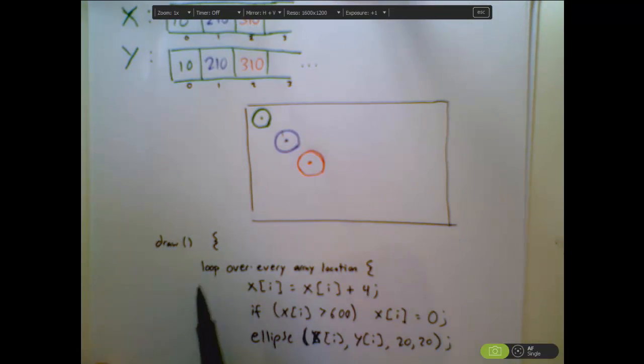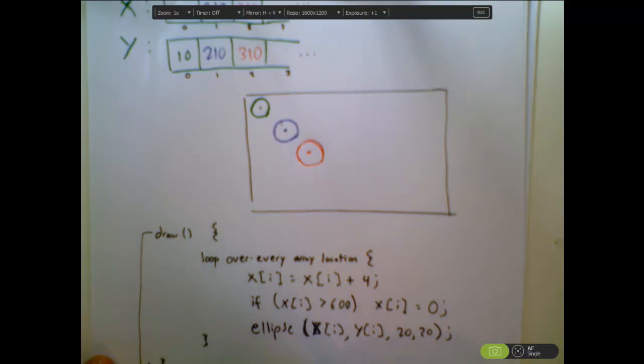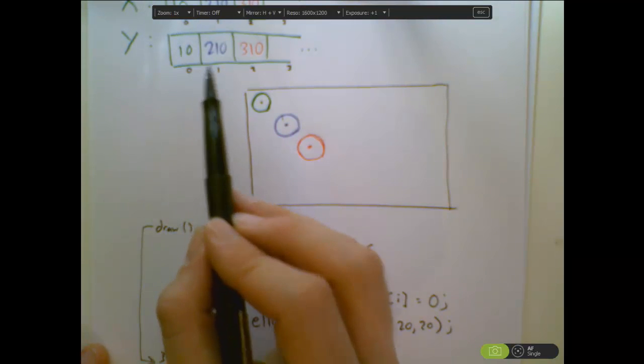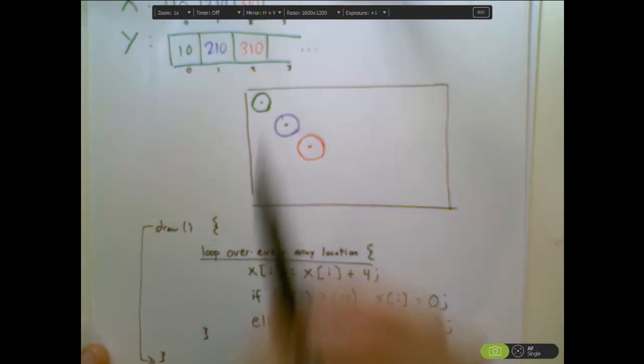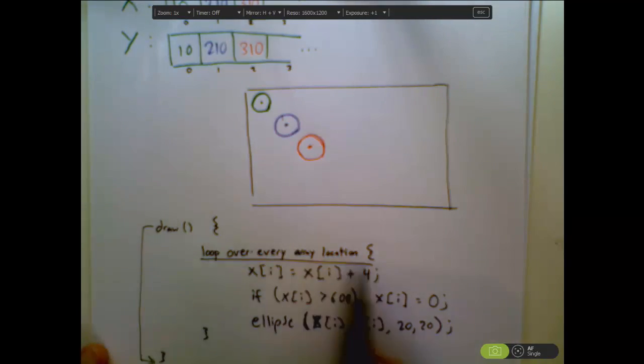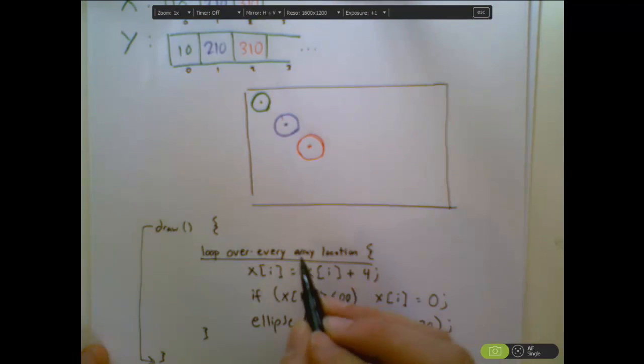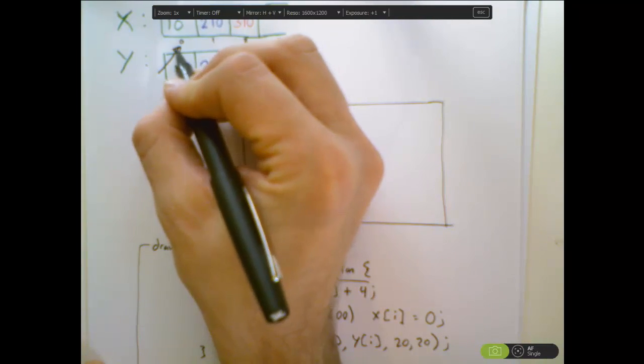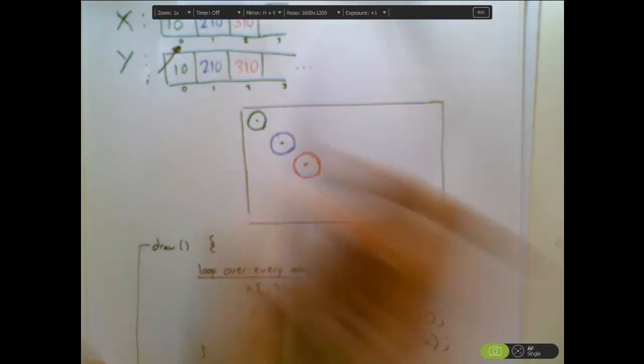Alright, so inside the draw loop, it's going to have the exact same steps, only I'm going to need to have a loop which takes us through every single spot in the array one at a time. We'll see what that looks like in code in just a second, but it's going to be something that uses i as an integer variable, and i is going to start out at zero, and it's going to go up by one every time.